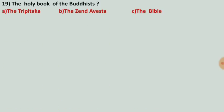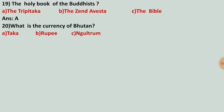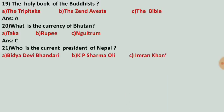What is the holy book of the Buddhists? Options are the Tripitaka, the Zend Avesta, and the Bible. The correct answer is number A, the Tripitaka. What is the currency of Bhutan? Options are Taka, Rupee, and Ngultrum. The correct answer is number C, Ngultrum.